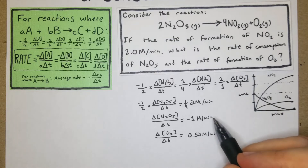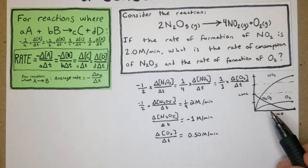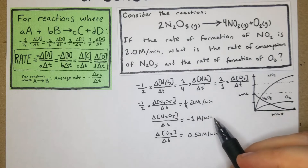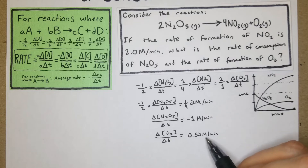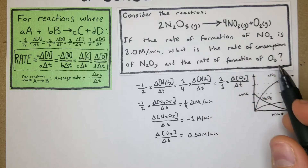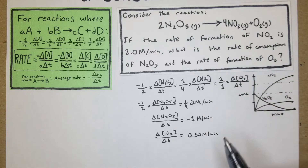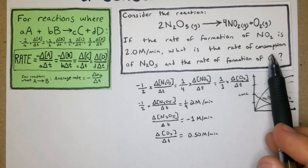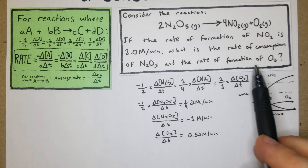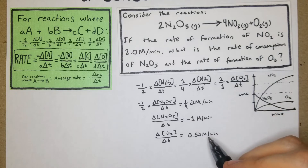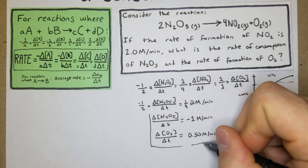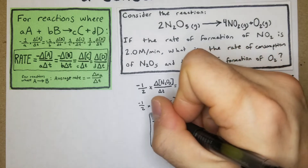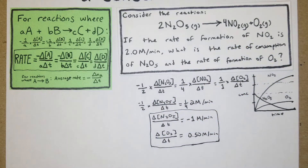These rates equate back to the formula: we have one-fourth, negative one, and 0.5. If you multiply each by two it works out to match the mole coefficients. So we've answered both parts — the rate of consumption of N₂O₅ and the rate of formation of O₂. Let's move on to the next problem.